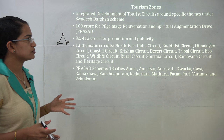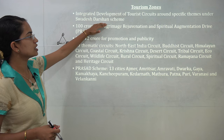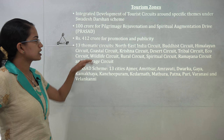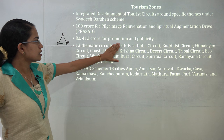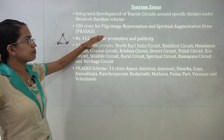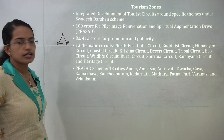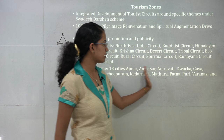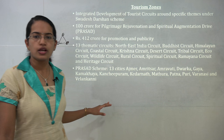Tourism zones: two major projects are the Swadesh Darshan scheme, which develops tourist circuits like the north-eastern circuit, Buddhist circuit, and tribal circuit — totalling 13 thematic circuits. The next is the PRASHAD scheme — Pilgrimage Rejuvenation and Spiritual Augmentation Drive — involving nearly 100 crore rupees. The 13 cities included are Ajmer, Amritsar, Amravati, and others. The full list is available at Exam Race.